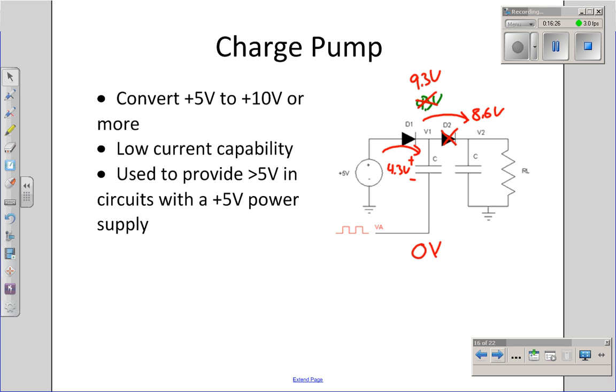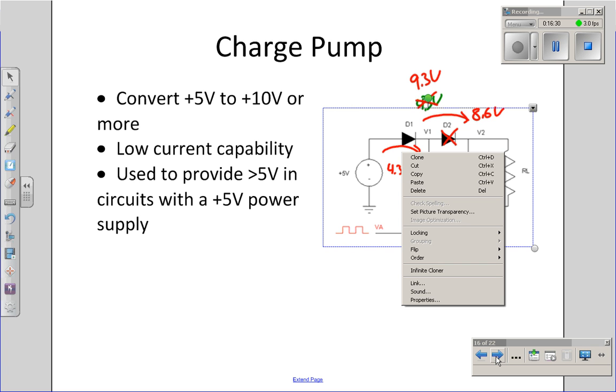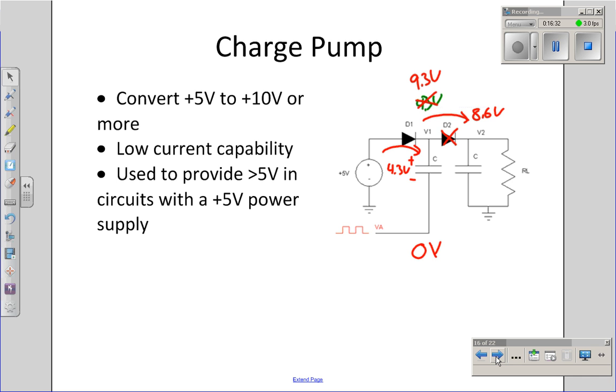Likewise, by pulsing VA low and high, 0 volts, 5 volts, I turn on D1 to charge up the capacitor. When I pulse VA high, diode 2 turns on and I pump charge with the load. That's the name charge pump.